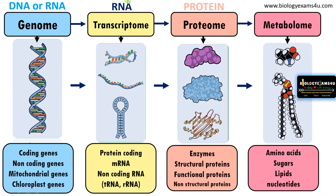In summary: transcriptome is formed from the genome by transcription and includes all RNA present in an organism; proteome is formed by the translation of the transcriptome and includes all different types of proteins present in an organism; metabolome is the fourth recently named group, which includes all small molecules present inside a cell or an organism.